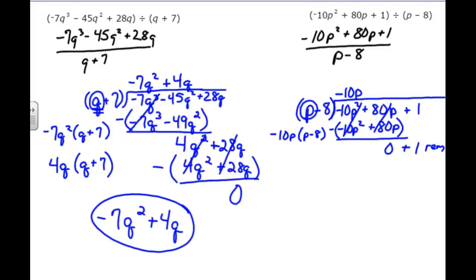The remainder is our 1, and so we do plus 1 over p minus 8 for an answer of negative 10p plus 1 over p minus 8. And that's all I have to say about that.